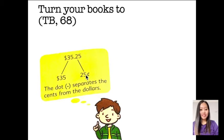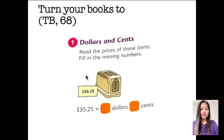Let's practice. Dollars and cents. Read the prices of these items. Fill in the missing numbers. This is a toaster to toast bread. So we have this. So that's the dollar, and here's the cent. Pretty easy, right? So your answer here should be $35. And here, what should it be? 25 cents. Correct.